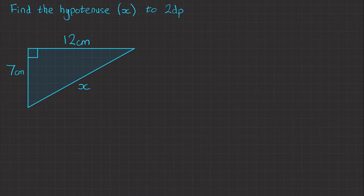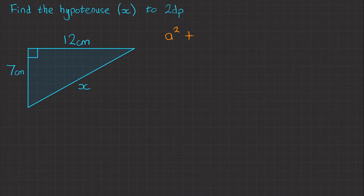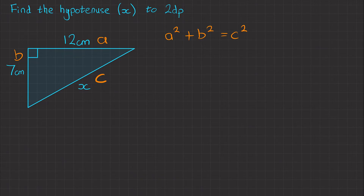The first question was quite nice. This one's not as nice because we want to find the hypotenuse x to two decimal places. Our first step is to write down Pythagoras' Theorem: a squared plus b squared equals c squared. Label the triangle — this is side c every single time. I'm going to label the top a and the side b. You can label a and b whichever way around you want, as long as you use it consistently throughout that question.